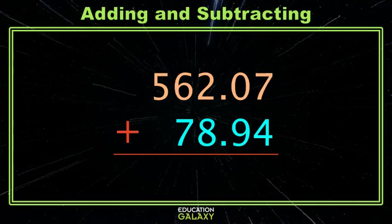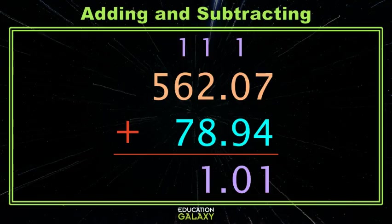7 plus 4 is 11 — we leave the 1, carry the 1. 1 and 9 is 10 — we leave the 0, carry the 1, and don't forget your decimal! 2 and 8 is 10, plus the 1 we carried, that's 11 — so 1 here, 1 carried. 6 and 7 is 13, plus the 1 we carried, so that's 14 — 4 here, 1 goes here. And lastly, 1 plus 5 is 6. Got it? Great.